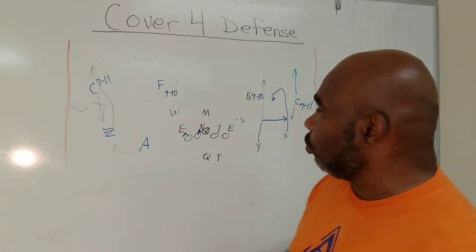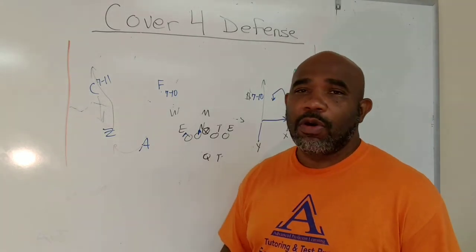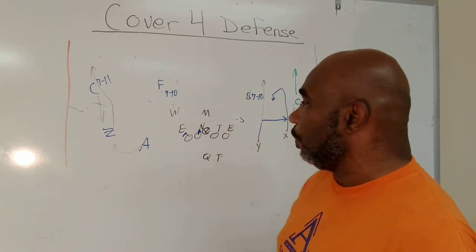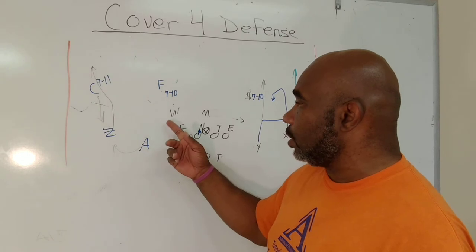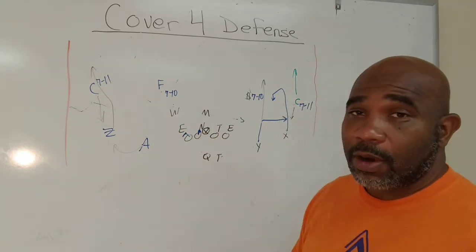But I do like two-read. Again, you're reading the number two receiver. Each of these comes with their own set of strengths and weaknesses. There are some things we can do to read to put you in the bind. I already talked about one of them is, you've got to pull that will out of the box. This inside run game is starting to look pretty good to me.